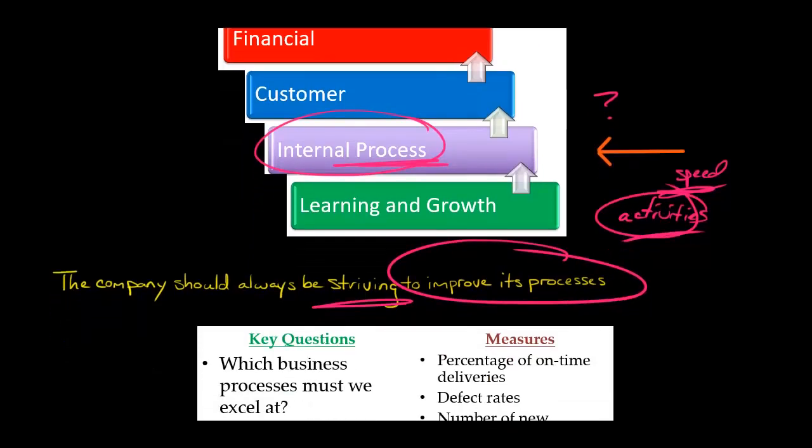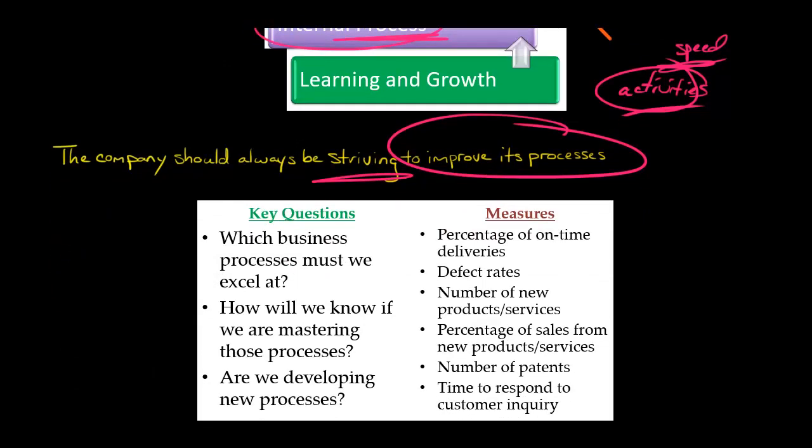And so it could be thinking about some of the following questions. You could think about, what are our processes that we need to excel at? Again, it depends on the industry, depends on the company. As I said, fast food would be speed.